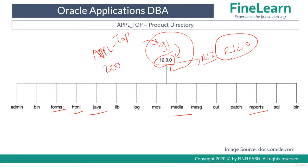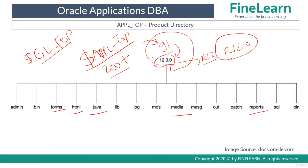Similarly, if there are 200+ products in Oracle E-Business Suite, all the product-specific files are there in APPL_TOP under each product top. Remember that all these products also have one environment variable. By default, APPL_TOP has an environment variable, and GL for example has GL_TOP as an environment variable to directly access the product top. GL_TOP is nothing but APPL_TOP/GL/1200.